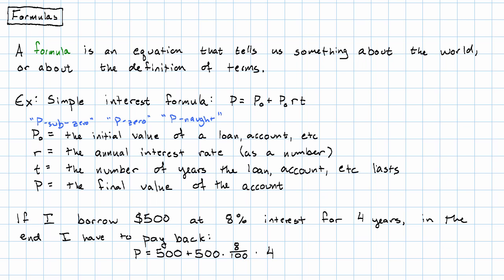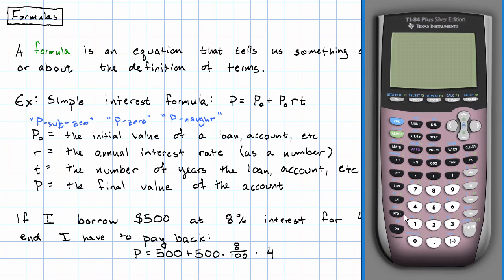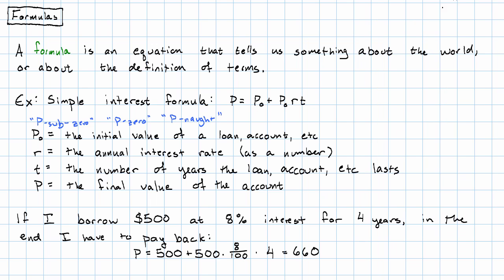If I put that into my calculator, I'll have 500 plus 500 times 8 over 100 times 4. That's 660. In the end, I have to pay back $660.